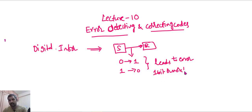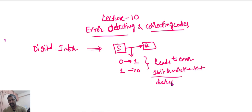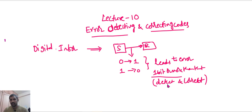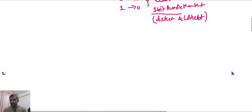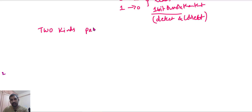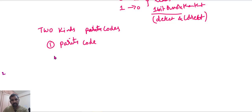For our syllabus concerns, we are going to see how to detect one bit error and correct one bit errors. We will be checking how to find a one-bit error in received data and how to correct it at the receiver side. To do this, we have two kinds of parity codes: the first one is parity code, and the second one is Hamming code.